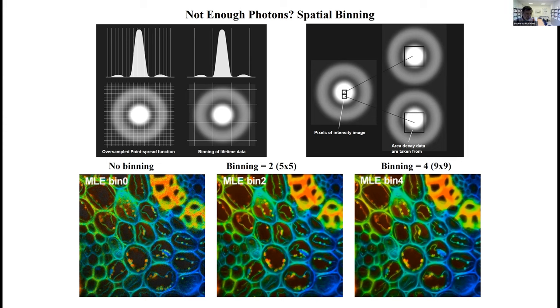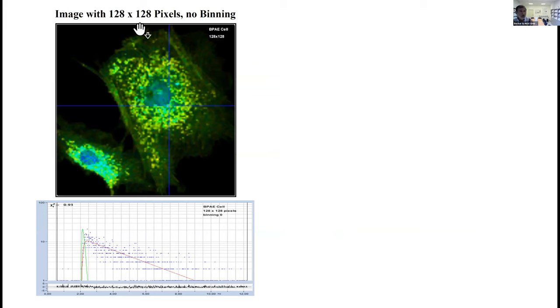I'm perfectly aware that many people disapprove of binning. They think we are losing information by that. But in fact, correct binning is the way to beautiful lifetime images. The alternative to binning in data analysis would be binning in data acquisition. In other words, you would have to record the photons in a smaller number of pixels.